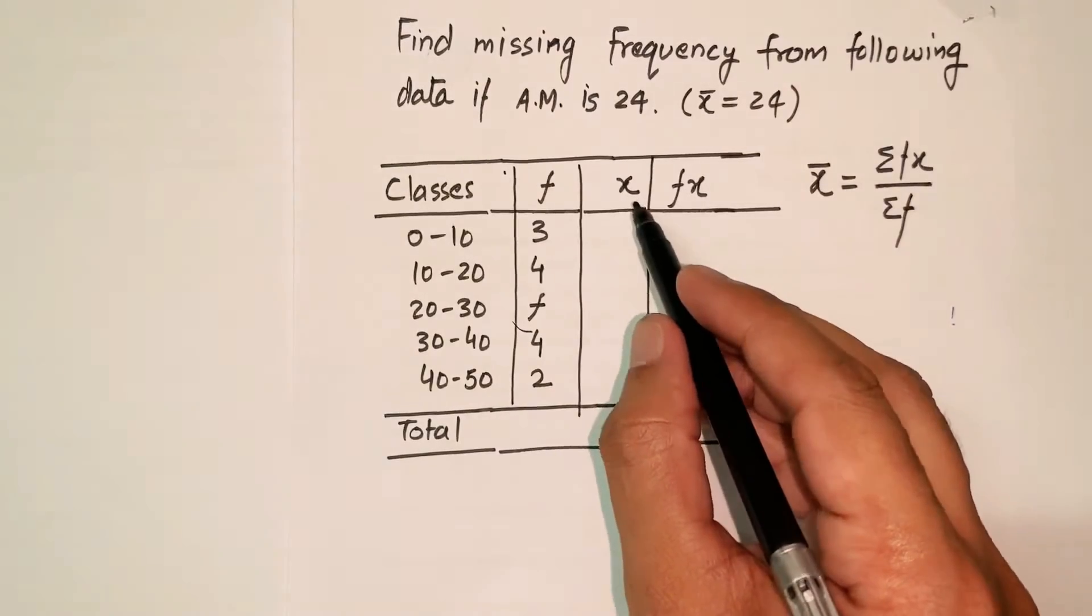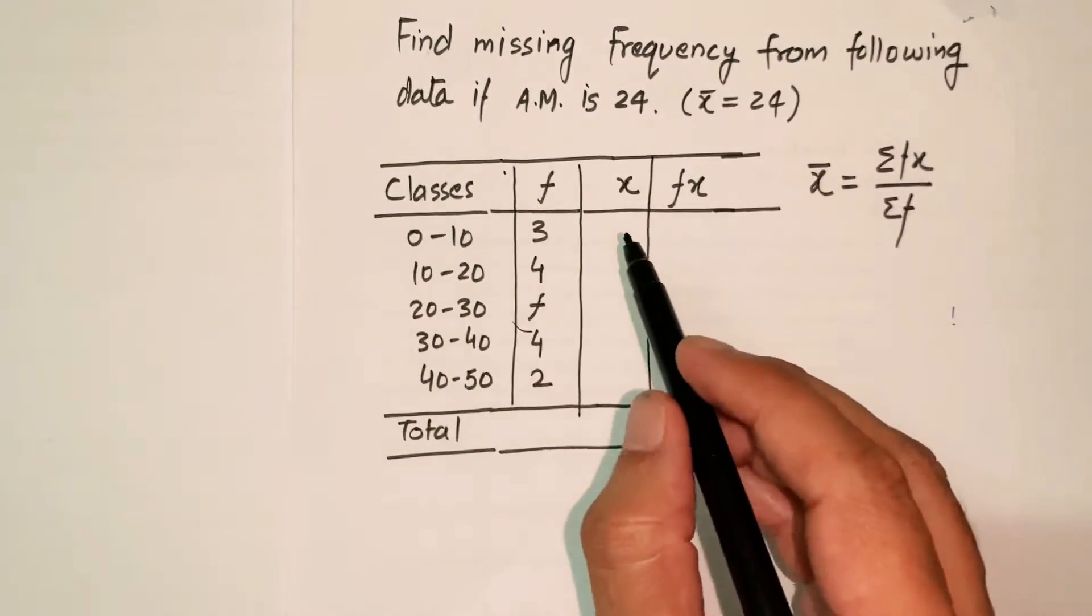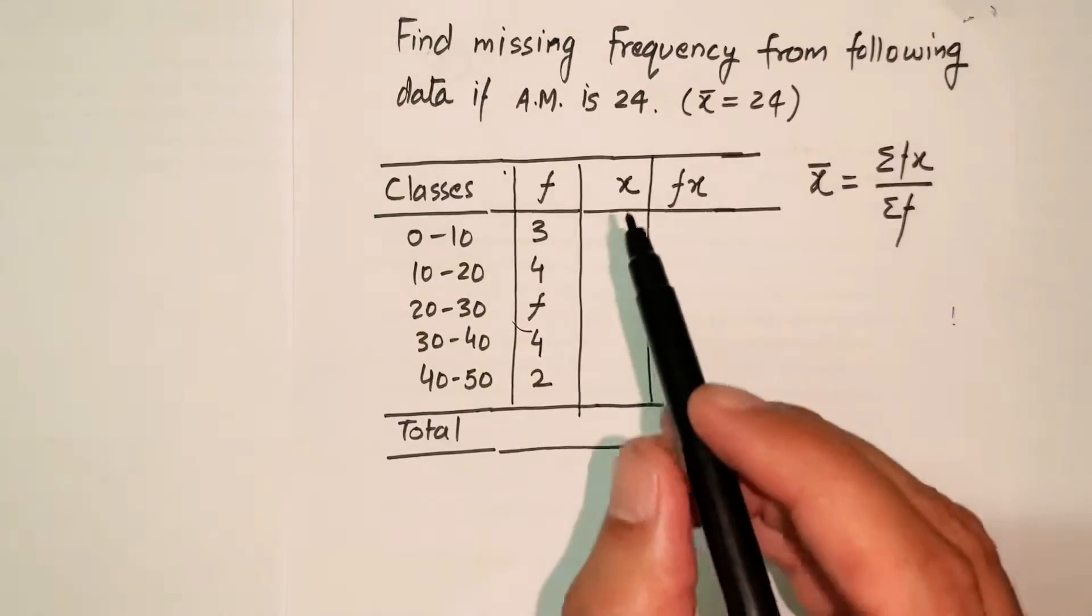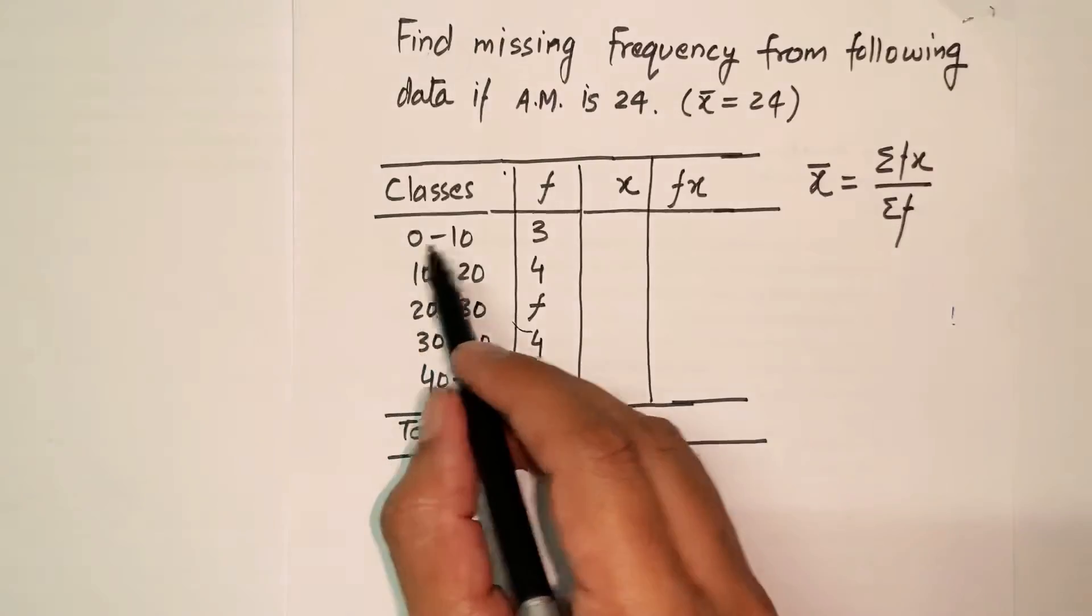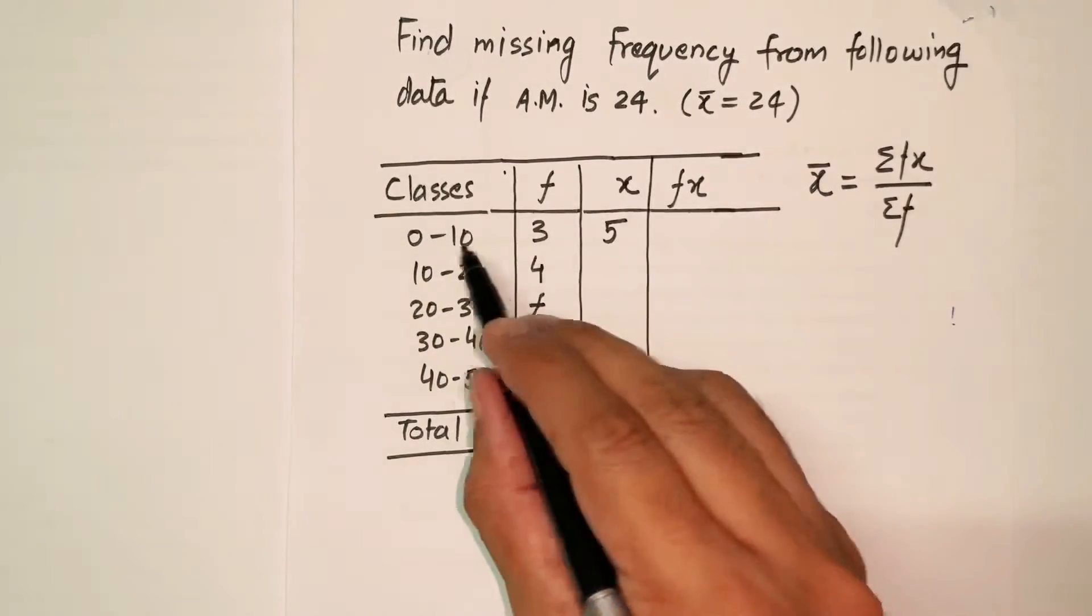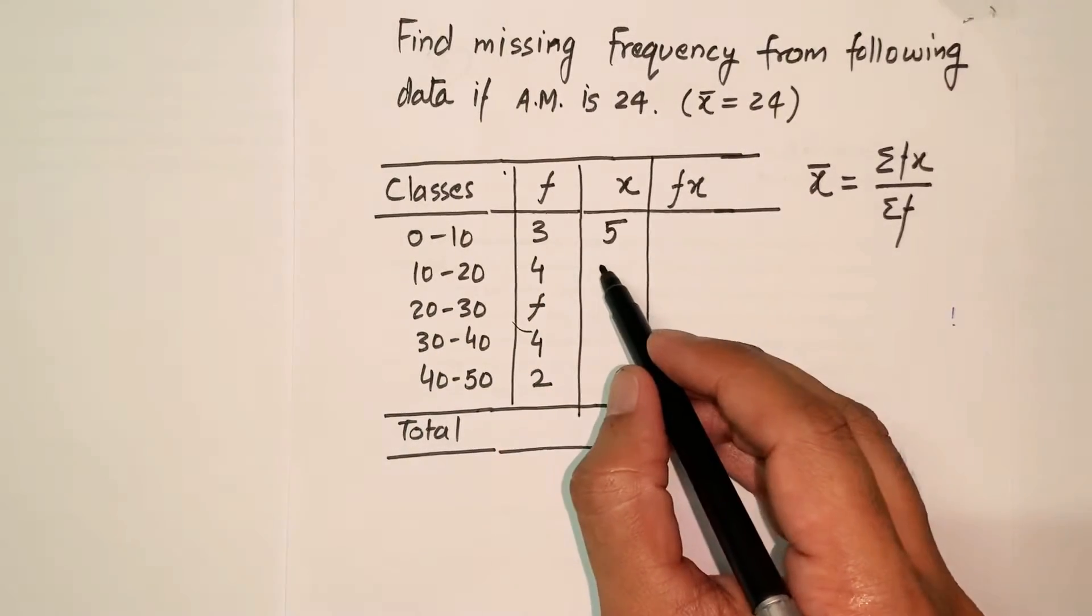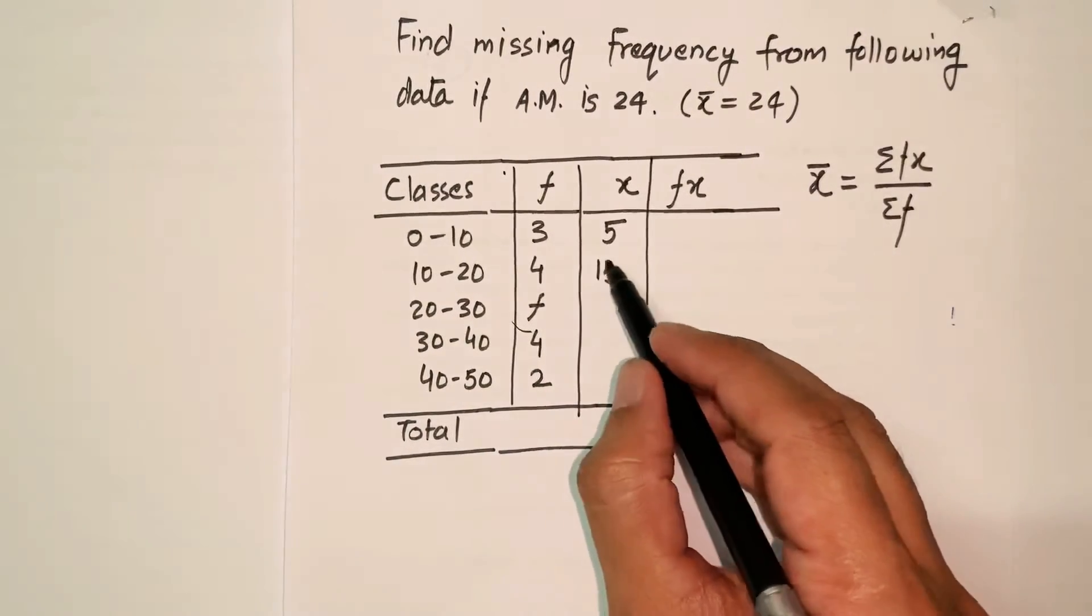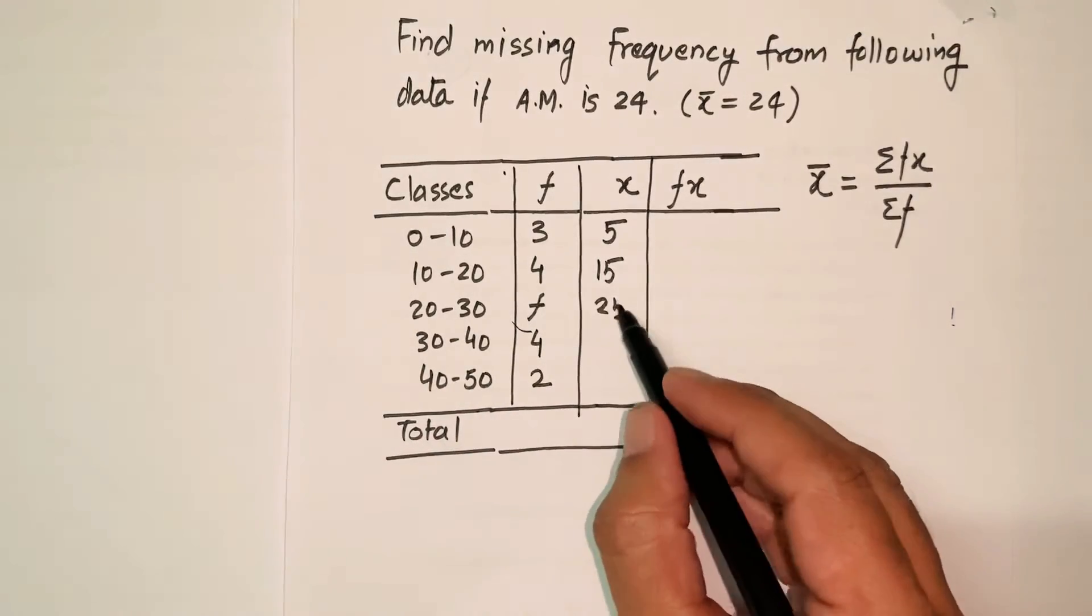First of all we'll calculate x, which is the midpoint. x would be upper limit of the class plus lower limit of the class divided by 2. So the first value of x is 5 (0 plus 10 divided by 2), then 15, then 25, then 35.